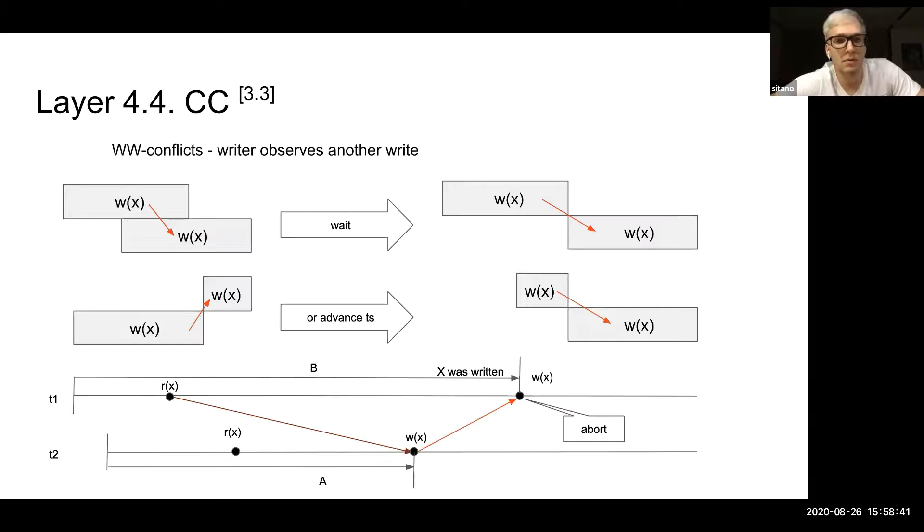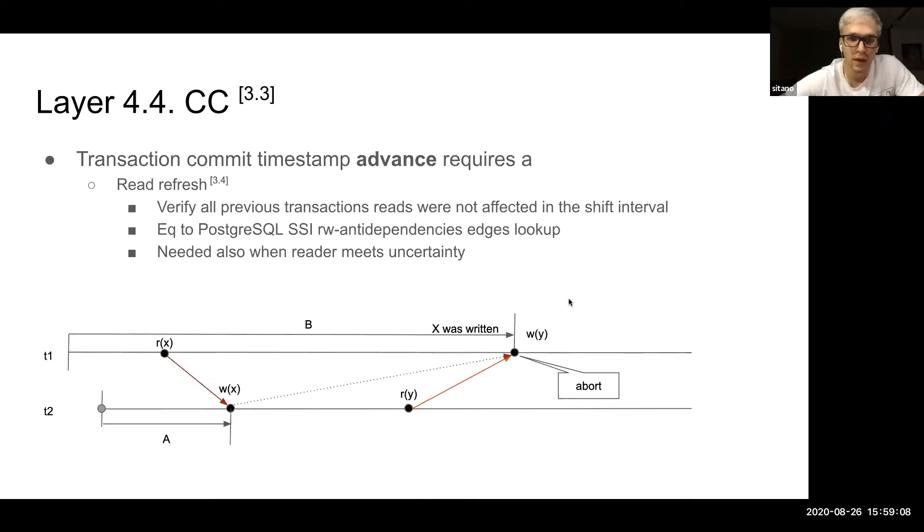With write-write conflicts, it basically does the same. If the timestamp of the observed write is smaller than the write we are currently doing, it just waits until it will be committed. If it meets the write that has the higher timestamp, it just advances its own timestamp forward to have the proper direction of the conflict edge. This advancing of the timestamp is the main magic of this algorithm.